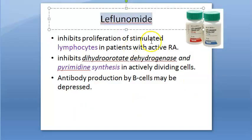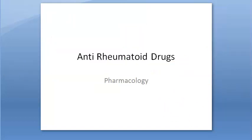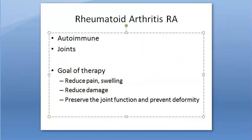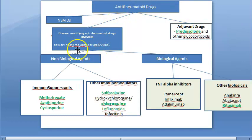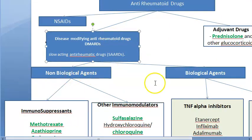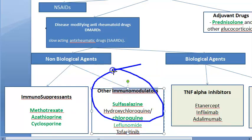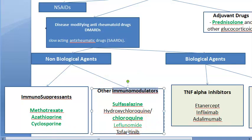In this video, let us look at leflunomide. Leflunomide is an anti-rheumatoid drug. We have already seen rheumatoid arthritis and the classification of anti-rheumatoid drugs. Under disease-modifying anti-rheumatoid drugs, under non-biological agents, it is not an immunosuppressant — it is an immune modulator. We have sulfasalazine, chloroquine, and this leflunomide.